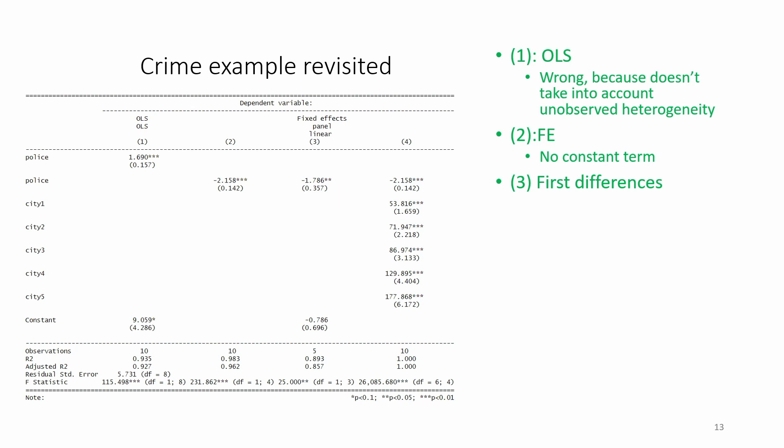Model 3 is a first difference regression where time-invariant individual-specific unobserved heterogeneity is removed by taking differences. The coefficient on police is negative here, minus 1.786, similar to what we observed for the fixed effects model in column 2.